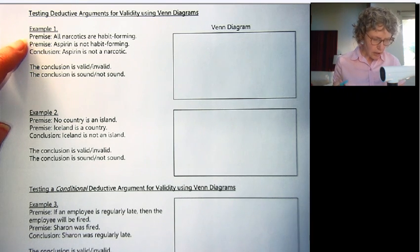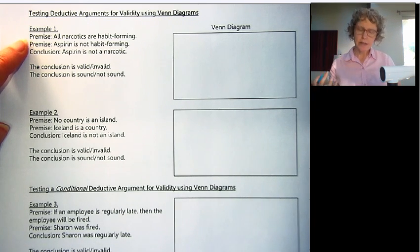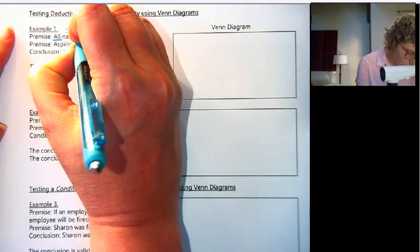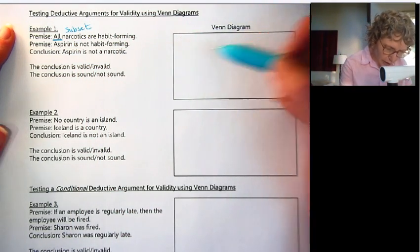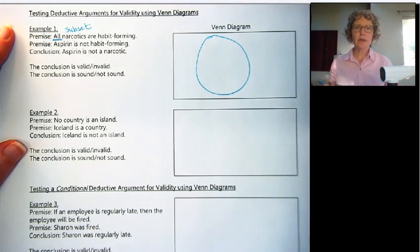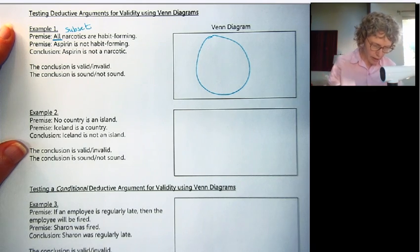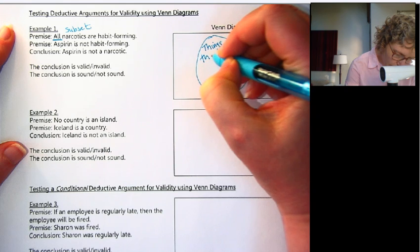All narcotics are habit-forming. The word 'all' is a keyword for subset — it means one is inside the other. So we need to figure out which is the bigger set: narcotics or things that are habit-forming? Things that are habit-forming is the bigger set, because there are more things that are habit-forming than just narcotics.